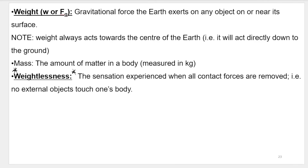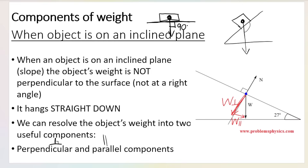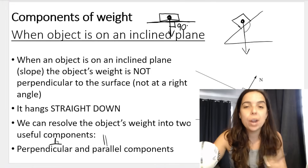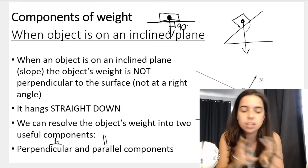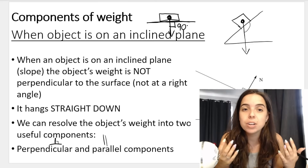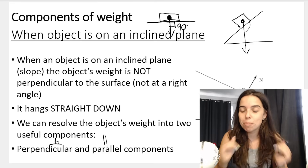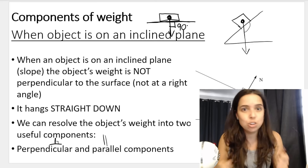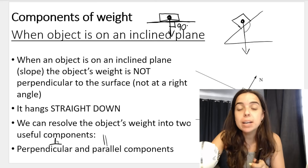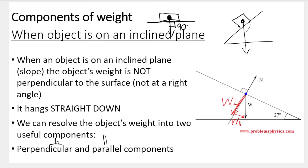The most important thing in today's video is how to calculate the components of weight — resolving weight into its components. Remember, weight acts straight down. If you have a horizontal surface with an object on it, the weight vector acts at 90 degrees relative to that surface, so we do not need to resolve weight into components. However, as soon as we have an object on a slope, that changes.